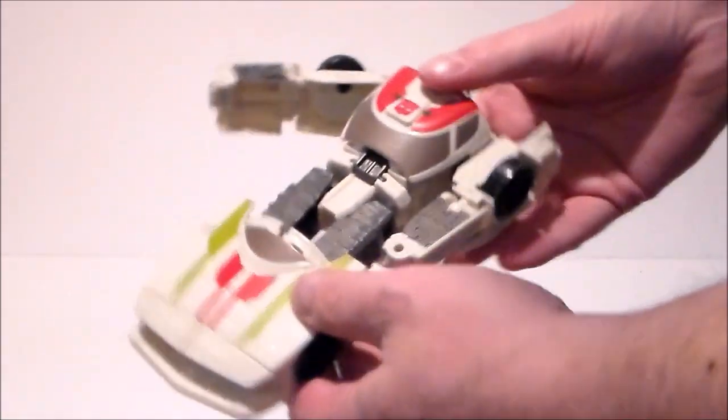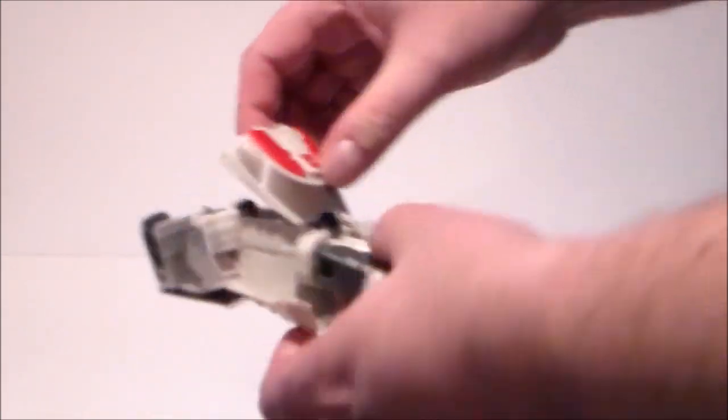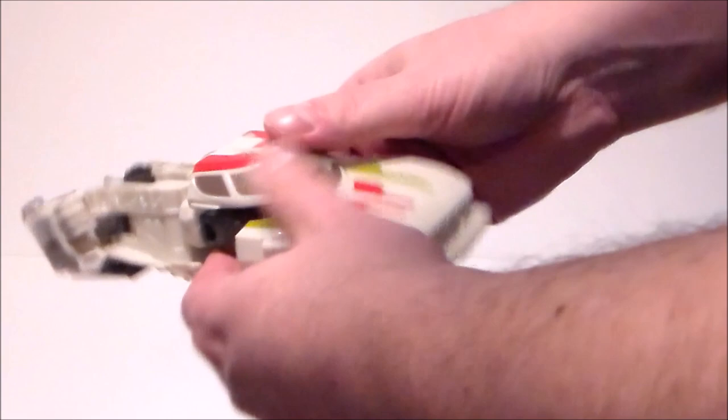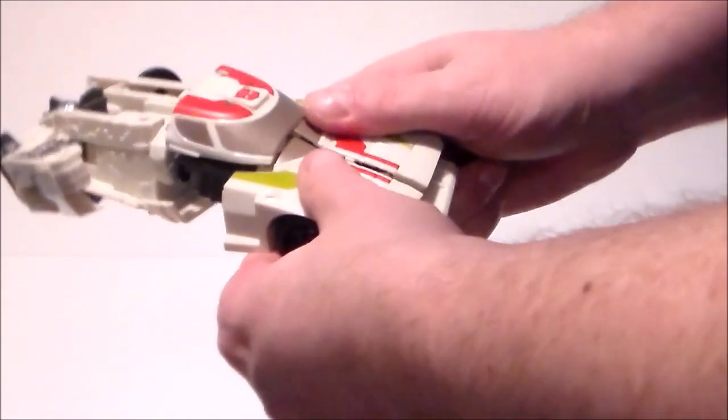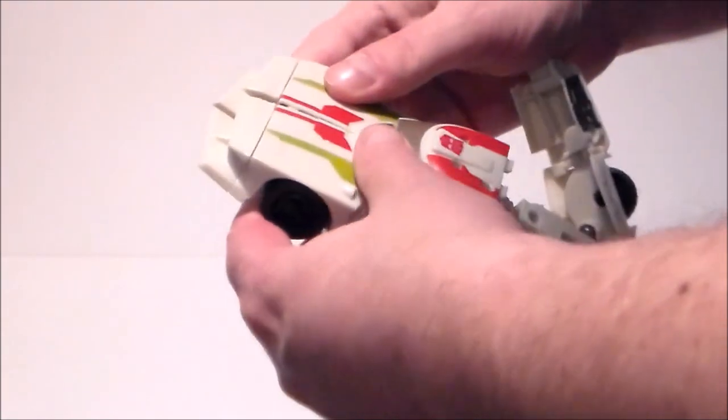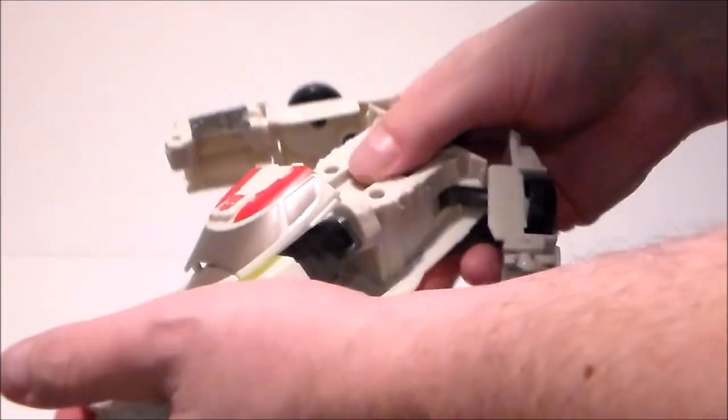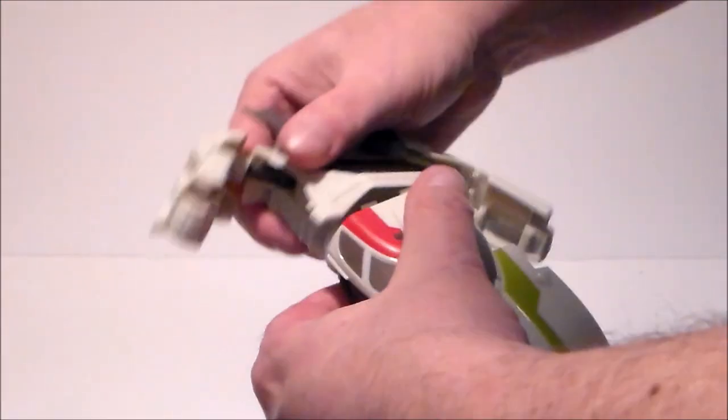Now we want to lift the chest piece down on the double hinge. It's going to connect into place there. This will probably come undone a few times until you can get it all together. It's kind of wobbly until you can get it there. Spin the waist around like this.